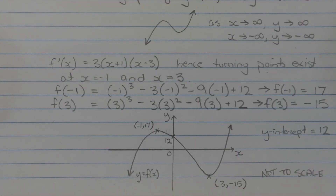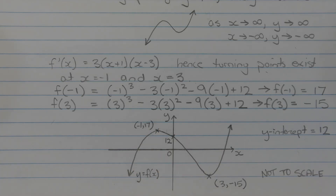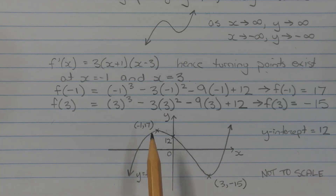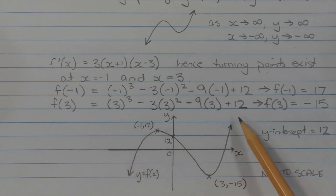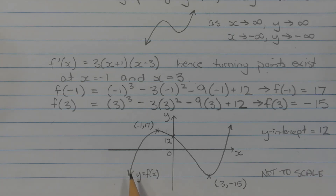To sketch the graph, I drew the coordinate axes with a ruler, labeling the origin, x-axis, and y-axis. I marked the two turning points: a local maximum at (negative 1, 17) and a local minimum at (3, negative 15). The y-intercept is at y equals 12. The curve takes on the characteristic positive cubic shape.